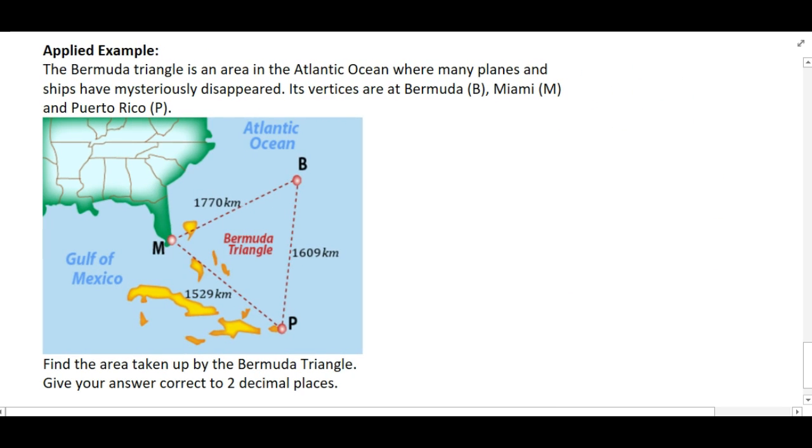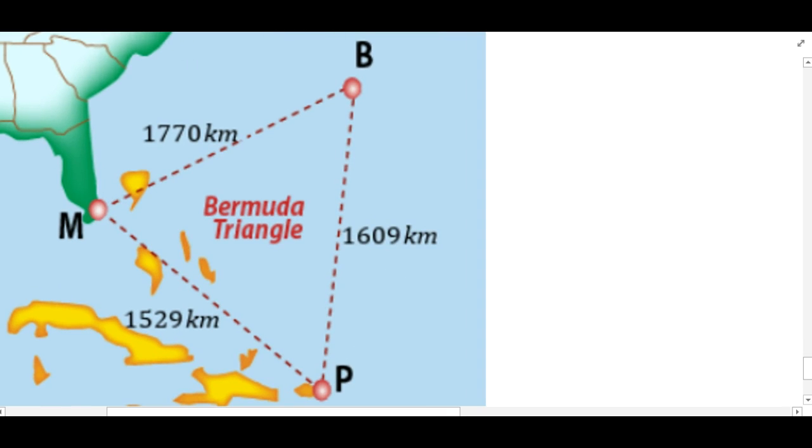So have you heard of the Bermuda Triangle? Alright, so they recently found out, apparently the Bermuda Triangle has been sinking ships because of freakishly large waves. So this is a mysterious triangle where ships go missing. Regardless of the backstory though, it is a non-right angle triangle.